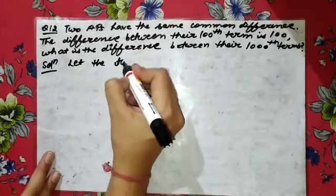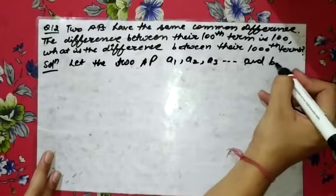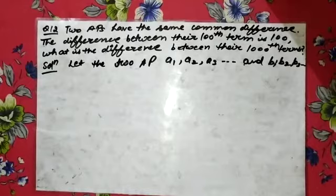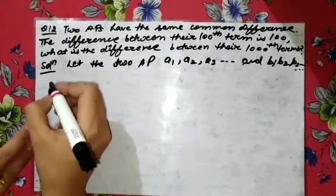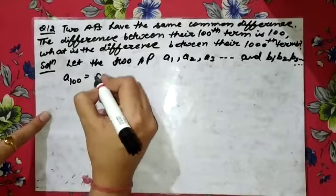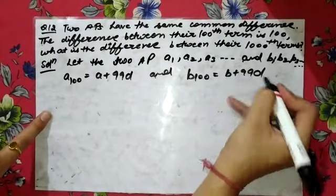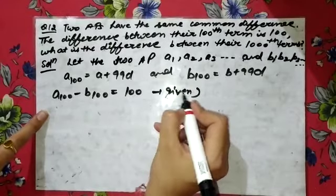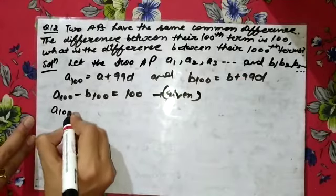Let the two APs be a1, a2, a3, ... and b1, b2, b3, ... with the same common difference d. The difference between the 100th terms: a100 minus b100 = (a + 99d) minus (b + 99d) = 100. The d terms cancel, giving a minus b = 100.